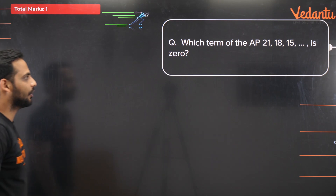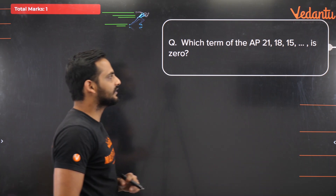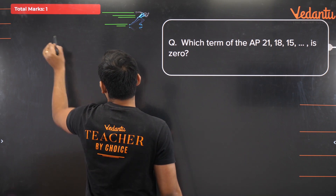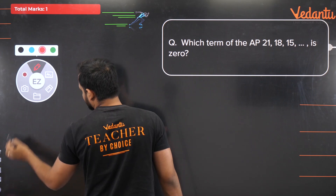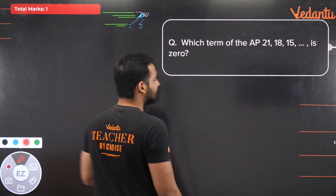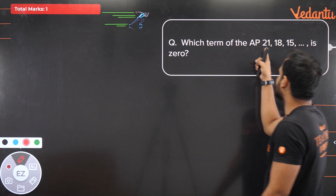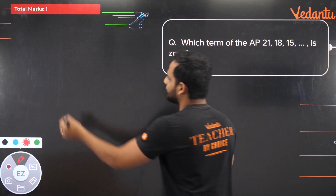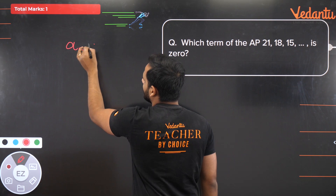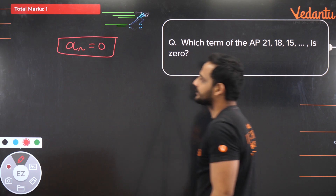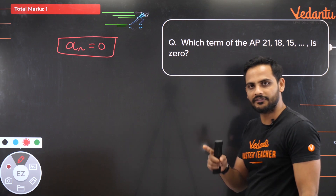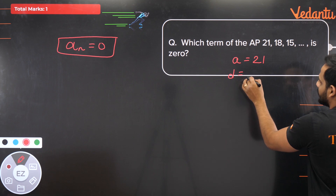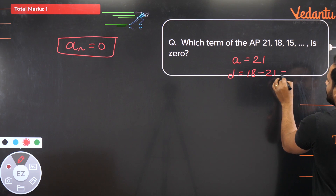Question 4: Which term of the AP 21, 18, 15... will be 0? Let the nth term equal 0. First term a = 21, common difference d = 18 − 21 = −3. Again d is negative since the AP is decreasing.